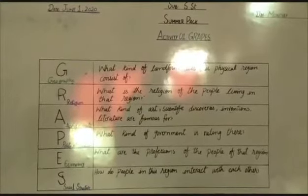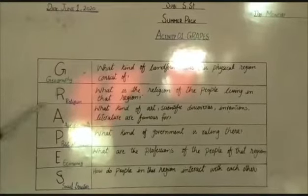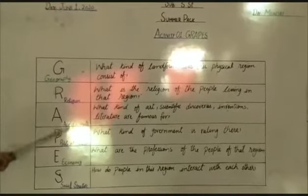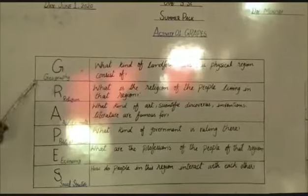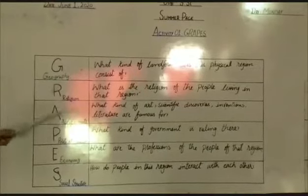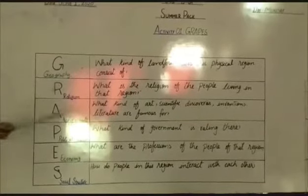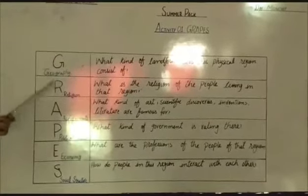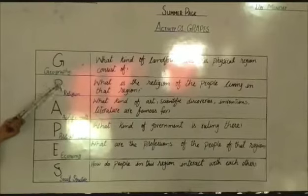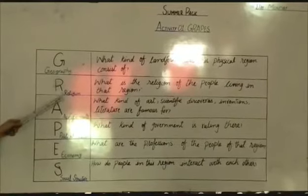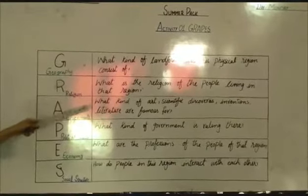In Geography, in any physical region, there are many things — mountains, rivers, plains, deserts. These are the physical features of that area.